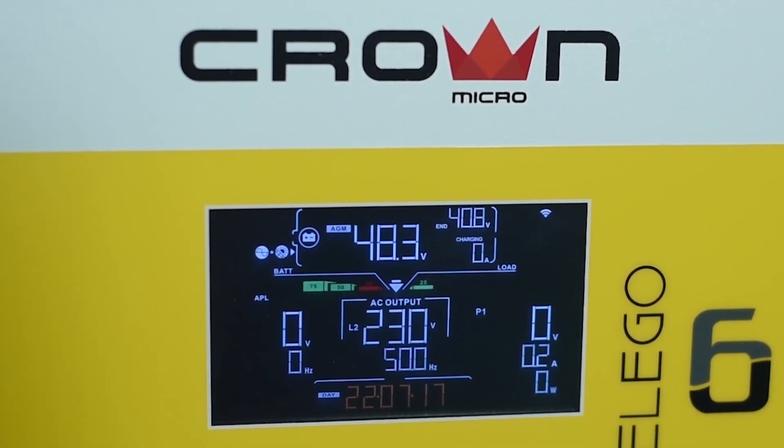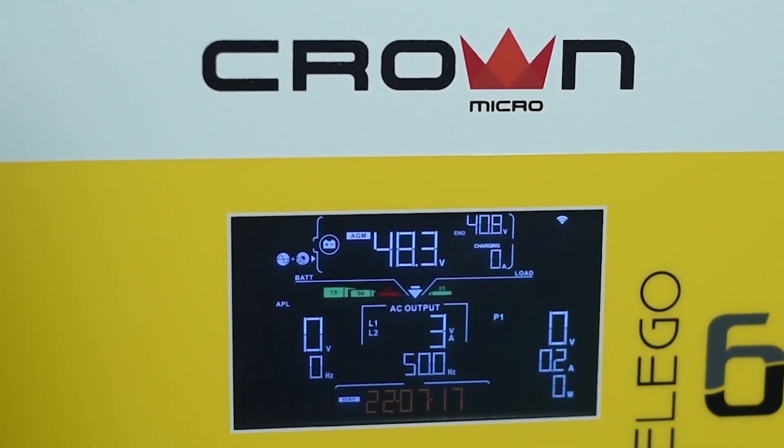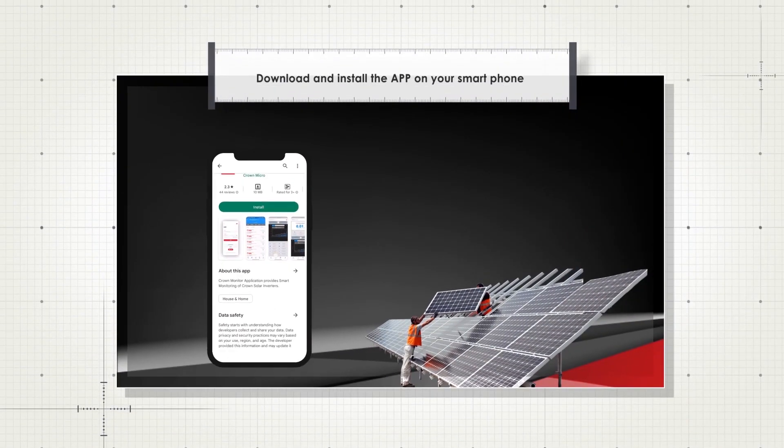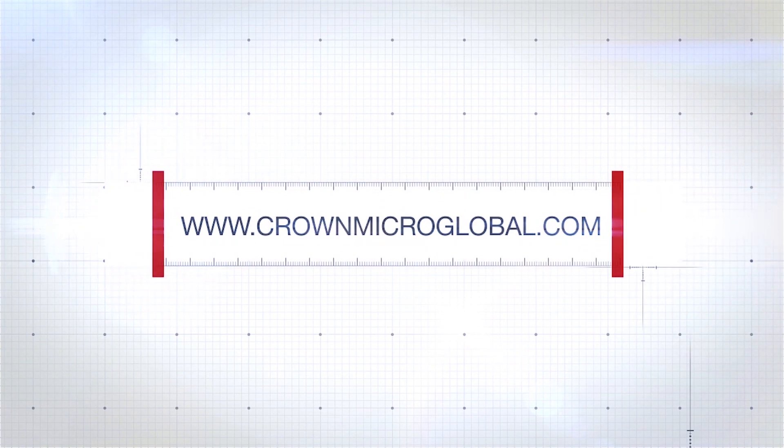For detailed operation, please refer to the manual included with your unit. Now the La Go 6 is ready to supply power. Download and install the app on your smartphone. Now you can perform remote monitoring and program settings with ease. Please visit our official website.